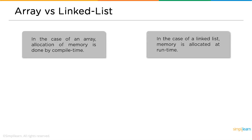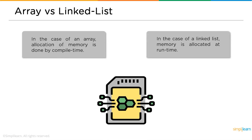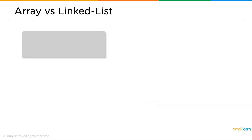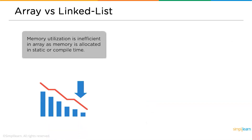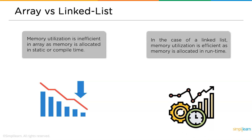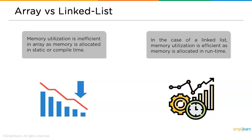In an array, memory allocation is done at compile time, whereas in a linked list, memory allocation is done during runtime. As a result, memory utilization is inefficient in an array since it is statically allocated at compile time. In a linked list, memory utilization is very efficient because memory is allocated dynamically during runtime.